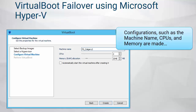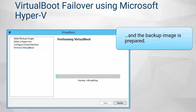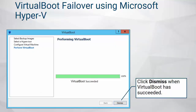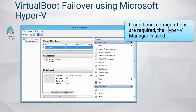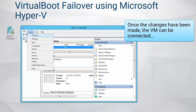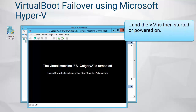Once the Virtual Boot process is complete, click the Dismiss button. After exiting the Virtual Boot wizard, you can open the Hyper-V Manager to make any additional changes required, such as network adapter settings.